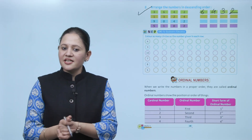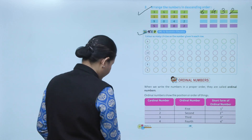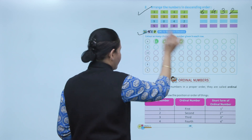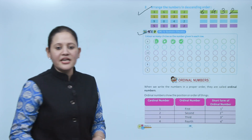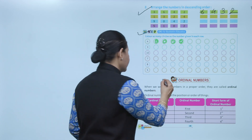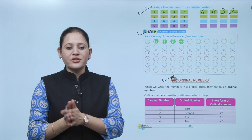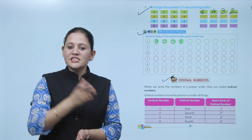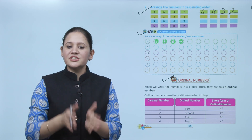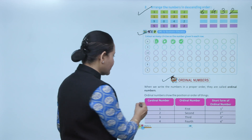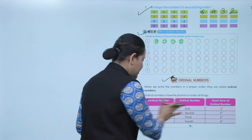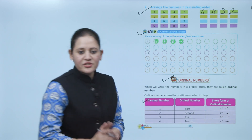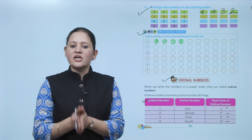Next, color as many circles as the number given in each row. First number is 4 — color 4 circles: one, two, three, and four. Read the number and accordingly color it. Next: ordinal numbers. When we write numbers in proper order they are called ordinal numbers. Ordinal numbers show us position or order — like in a race: first, second. Cardinal numbers 1, 2, 3, 4 become ordinal: first, second, third, fourth.